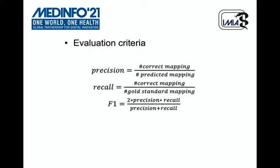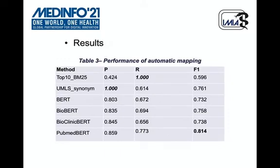Precision, recall, and F-measure were used as the evaluation criteria. Performances of these multiple models for automatic mapping are shown in Table 3. The top-10 candidate terms returned by BM-25 obtained the highest recall and a precision of 0.424.